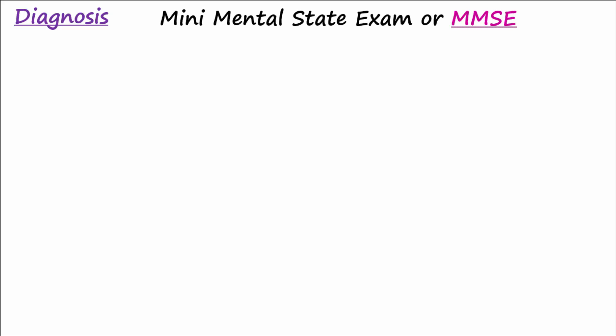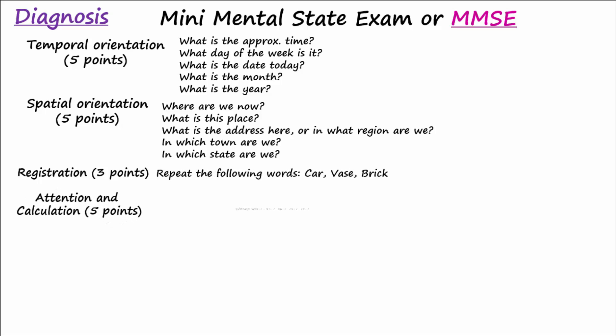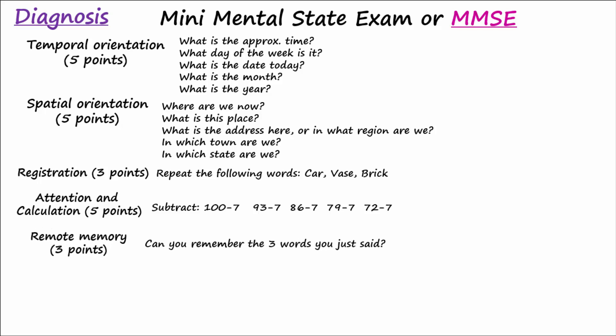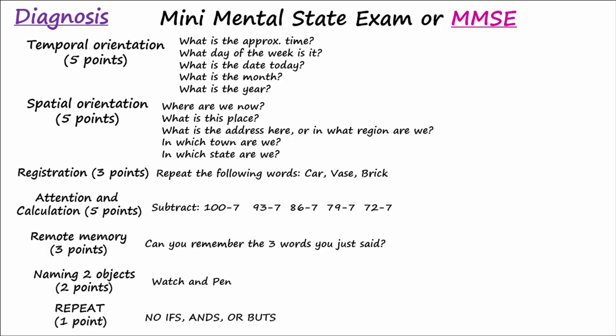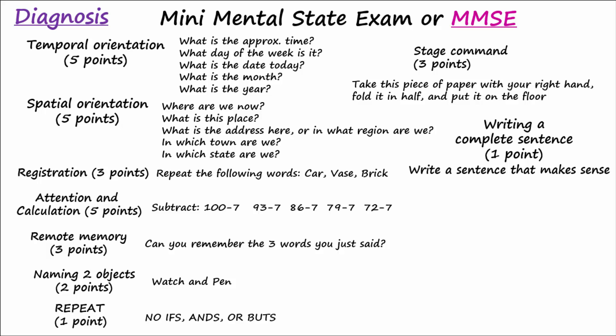To aid in the diagnosis of Alzheimer's disease, a Mini Mental State Exam, or MMSE, is given. This exam is divided into several groups of questions or challenges and is graded out of 30 points. The sections are: temporal orientation (5 points), spatial orientation (5 points), registration (3 points), attention and calculation (5 points), remote memory (3 points), naming two objects (2 points), repeat (1 point), stage command (3 points), writing a complete sentence (1 point), reading and obeying (1 point), and copying a diagram (1 point).